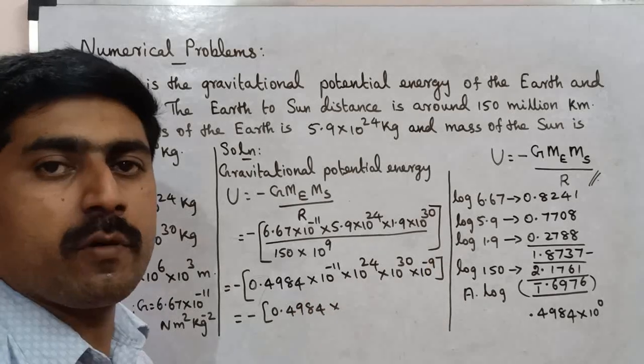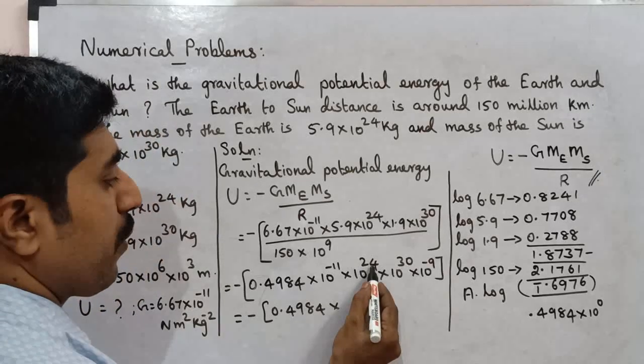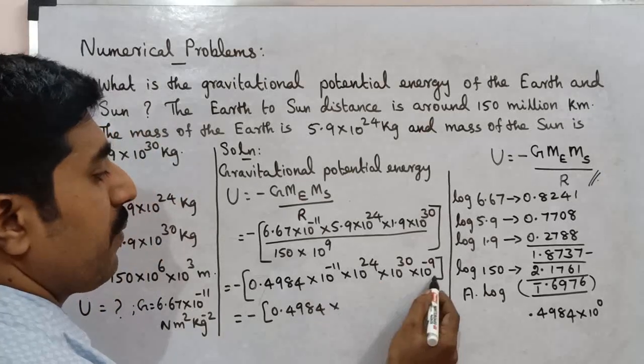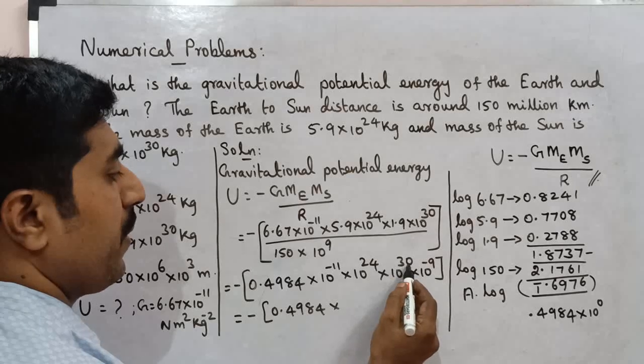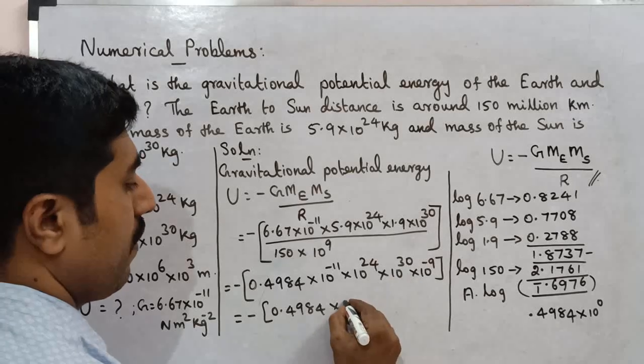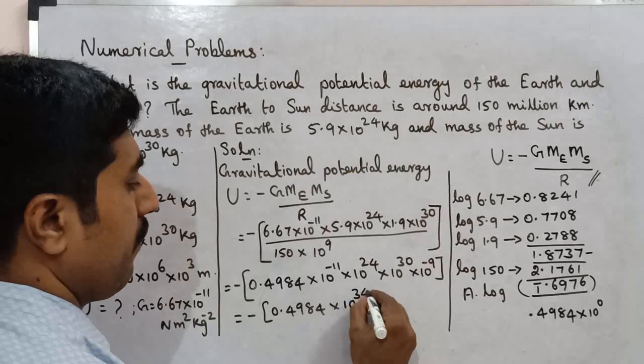That gives 10 power minus 20 from the coefficients. Then 10 power plus 24 minus 20, plus 30 gives 10 power 34. Combined with the minus 9 from the distance denominator, we get 10 power 32 joules.